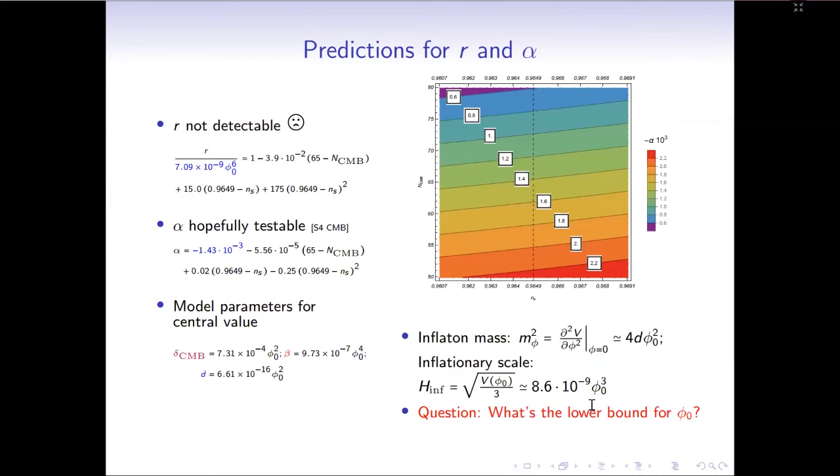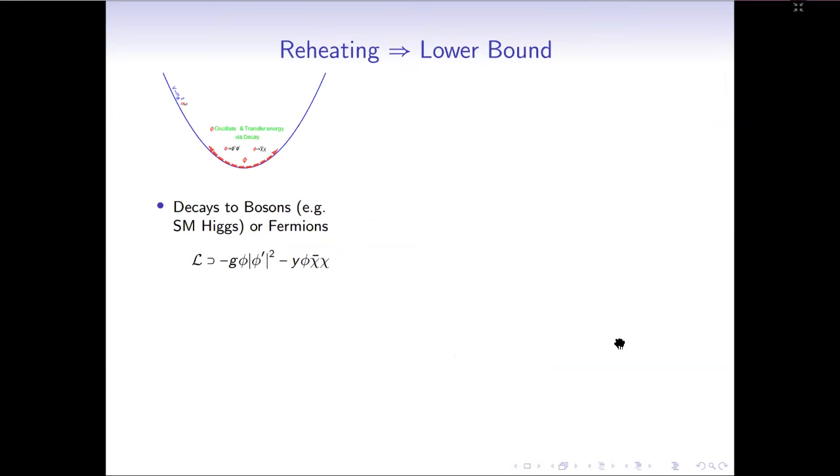So once the parameter space for phi_0 is known, all the model information is known, including the model parameters and the predictions. So now the question is what is the parameter space for phi_0? Because we are considering small field regime, the upper bound is just one in Planck units. So the most relevant question is what is the lower bound?